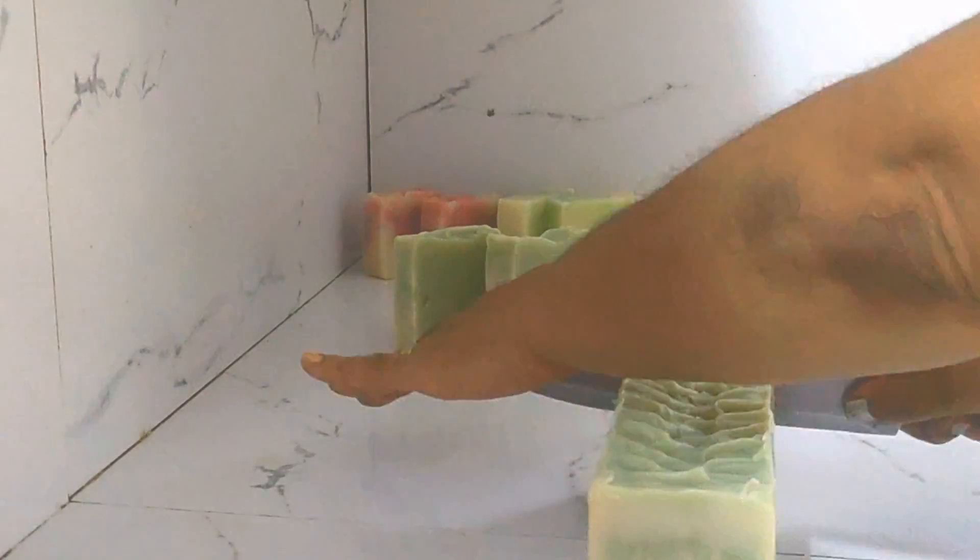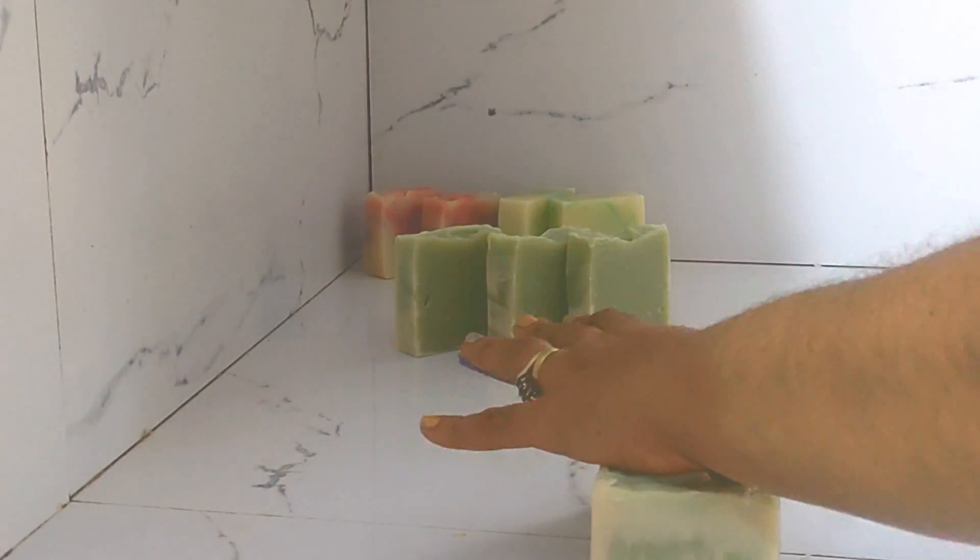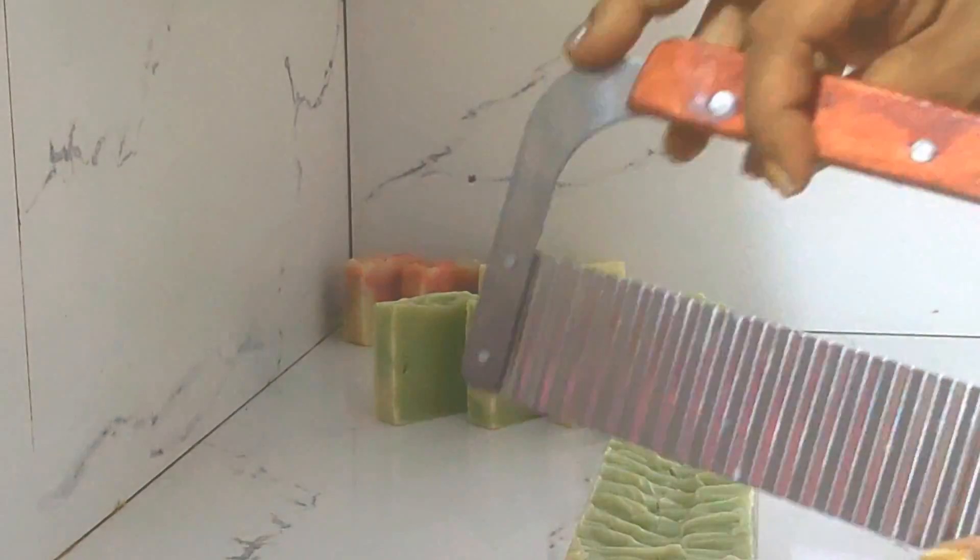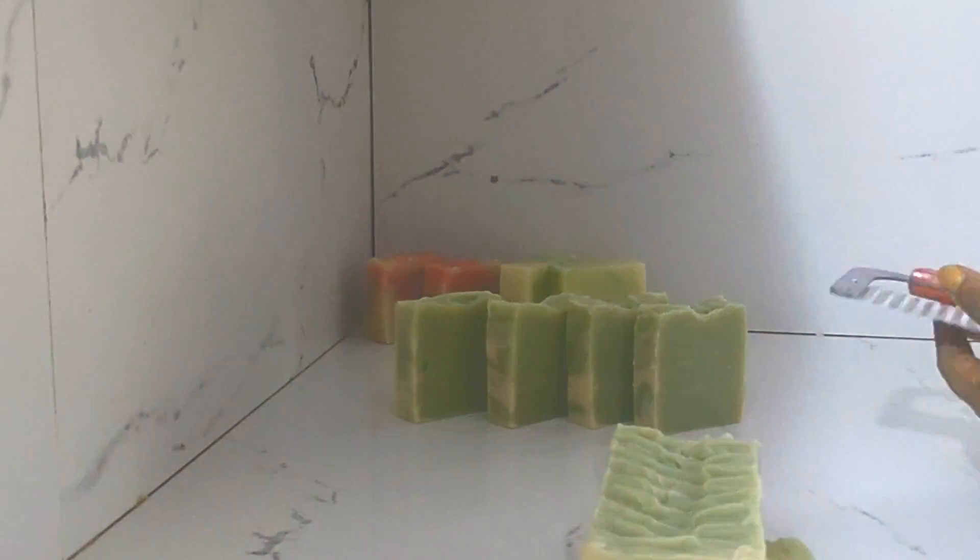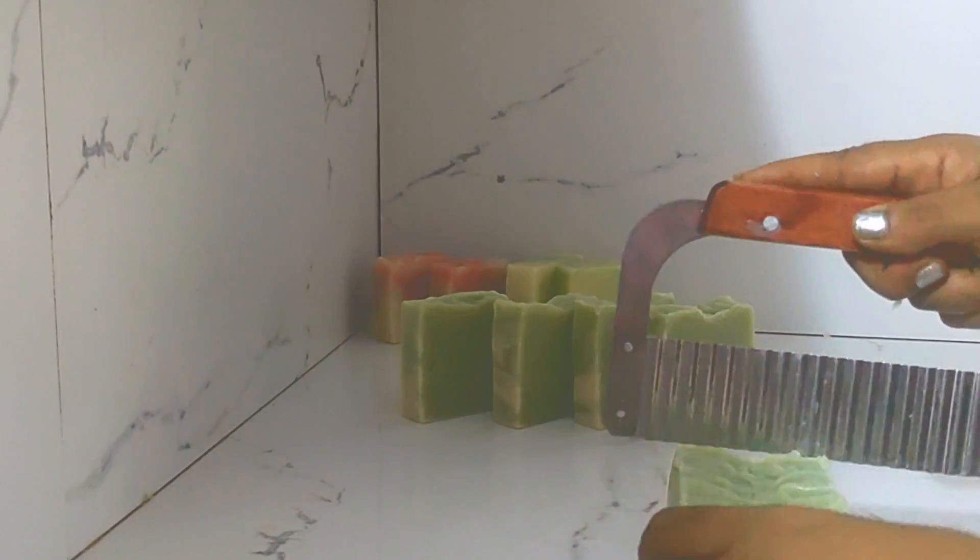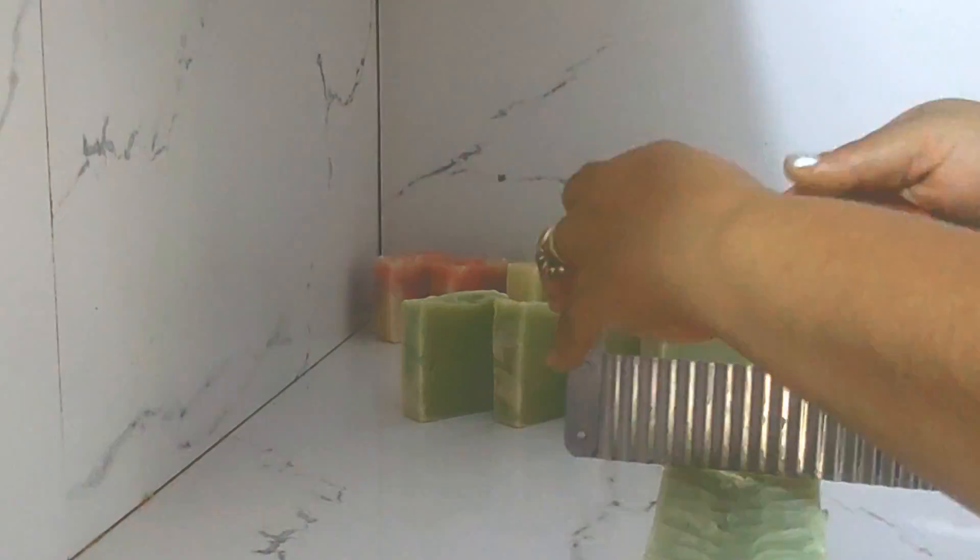I'm cutting the first half of my log with my regular knife and then I'm going to cut the second half of the log with a crinkle cutter which I recently bought. I'm just slicing a thin bit of the end before I start cutting again so that it's uniform on both sides.